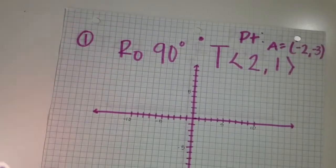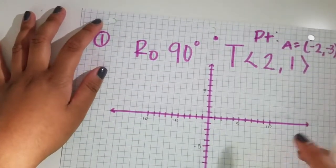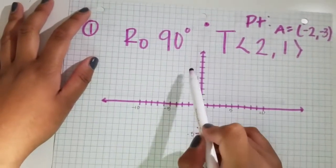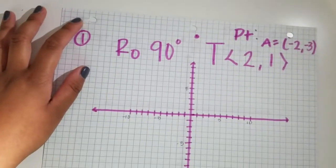For example, we have point A at (-2,3), and we have to do the composite transformation: rotate 90 degrees and translate T<2,1>.